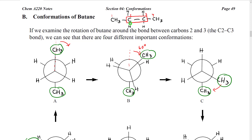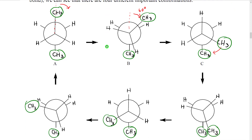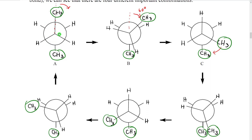When we draw Newman projections for this bond, we get pictures that look very similar to those of ethane, because again we have a front atom with three bonds attached, we have the back side of the rear atom, and the bonds on the rear atom are partially blocked from our view so they don't continue all the way to the center.